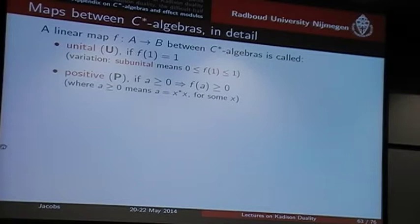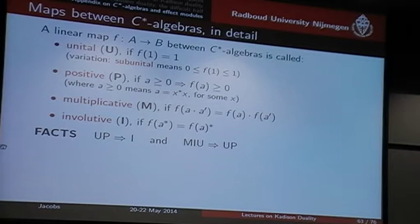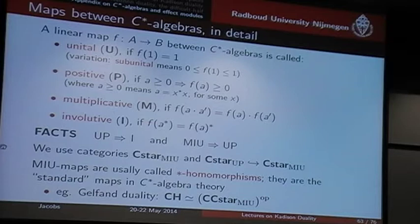The next requirement is positivity. A map is positive if it preserves positive elements, or equivalently if it's monotone. A map is multiplicative if it preserves the multiplication, and involutive — written I — if it preserves the involution. An easy lemma is then: UP implies I, so unital and positive implies involutive; and MIU implies UP. I will be using two categories: C*-MIU and C*-UP, of unital positive maps and unital multiplicative involutive maps. These MIU maps are traditionally called star-homomorphisms.